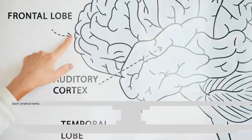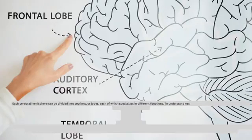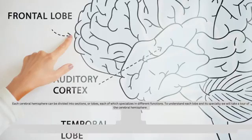The Geography of Thought. Each cerebral hemisphere can be divided into sections, or lobes, each of which specializes in different functions. To understand each lobe and its specialty, we will take a tour of the cerebral hemispheres.